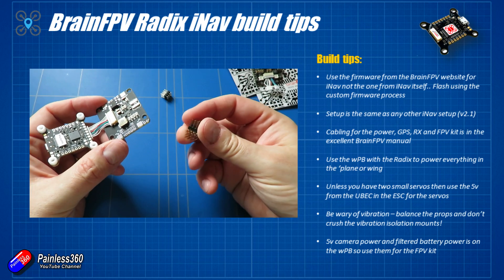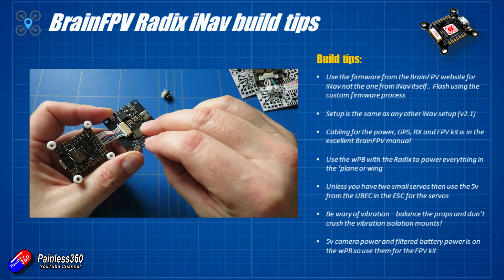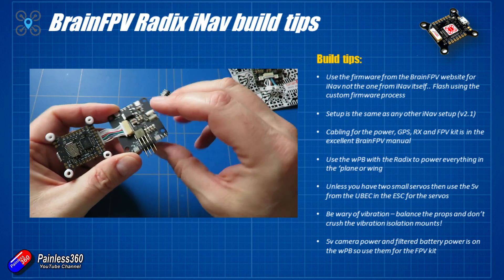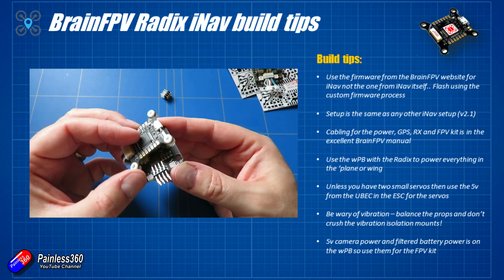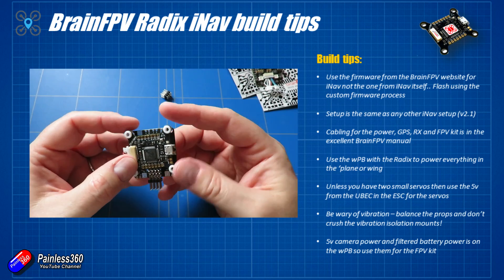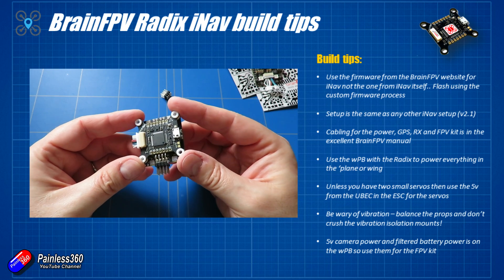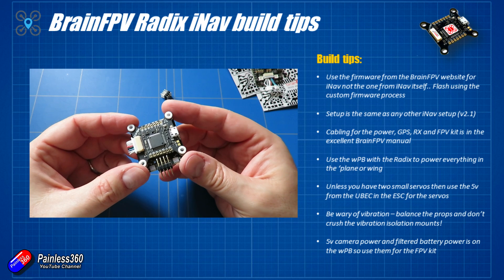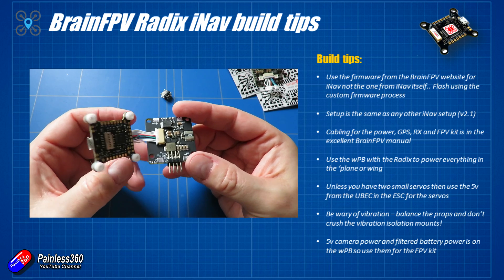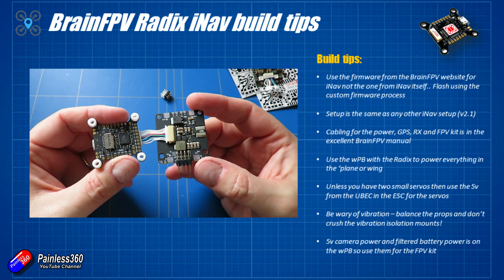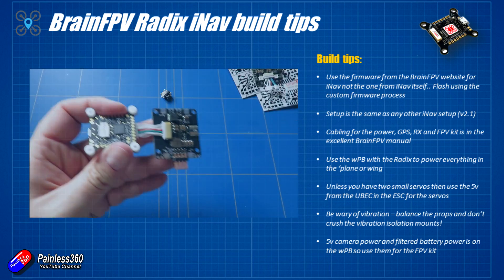Last couple of tips when putting this together: be wary of vibration. The flight controller comes with anti-vibration mounts — make sure you don't crush those when you install everything. If you're building an iNav wing for the first time and you're a quadcopter person, make sure you balance the props. A lot of quadcopter pilots don't bother, but in fixed wing it's far more important. Excessive vibration will be read by the IMU and gyros as potential movement, and that will cause all kinds of wacky stuff.